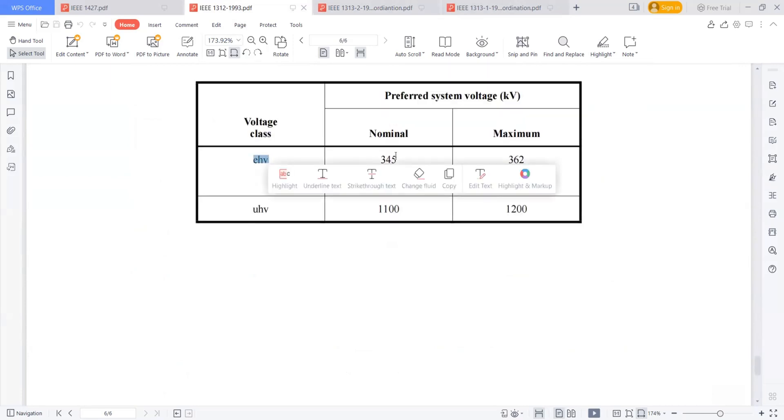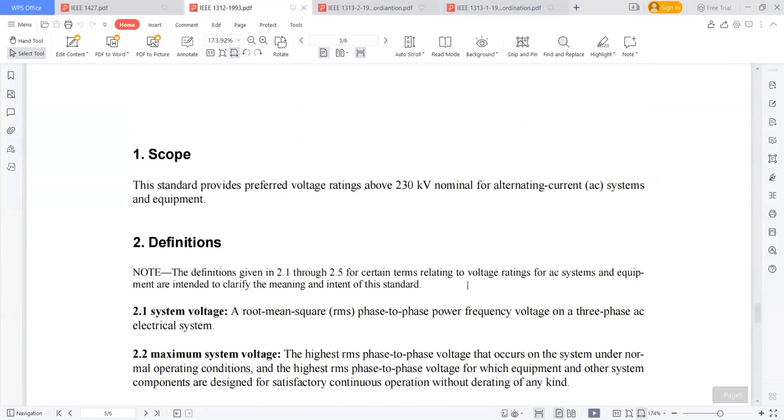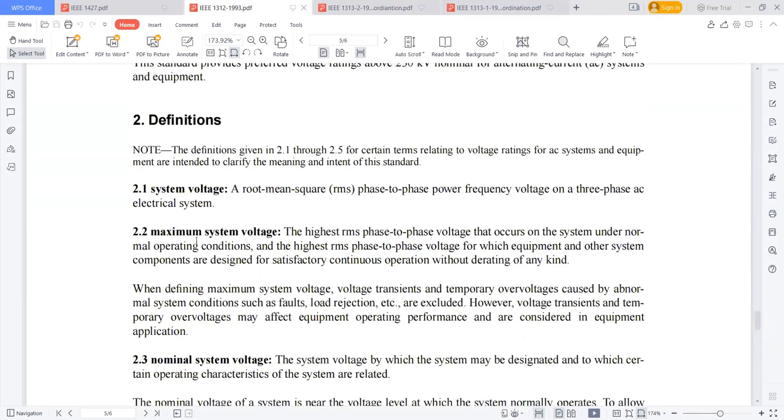Extra high voltages, generally the nominal is 345, 500, ultra high voltage is 1100 kV. The maximum is this. So it gives what we call the definition of the system voltage.